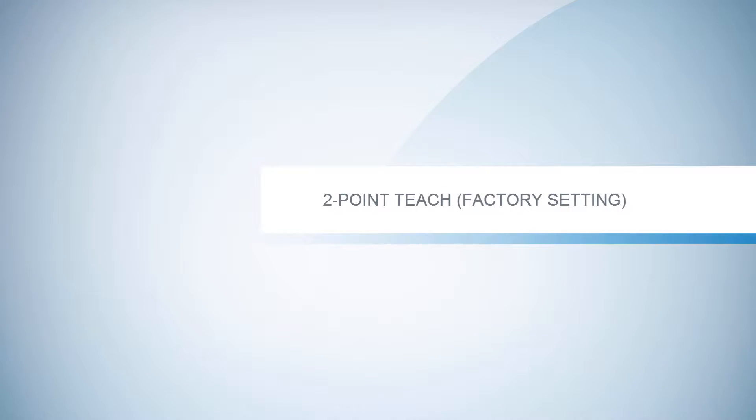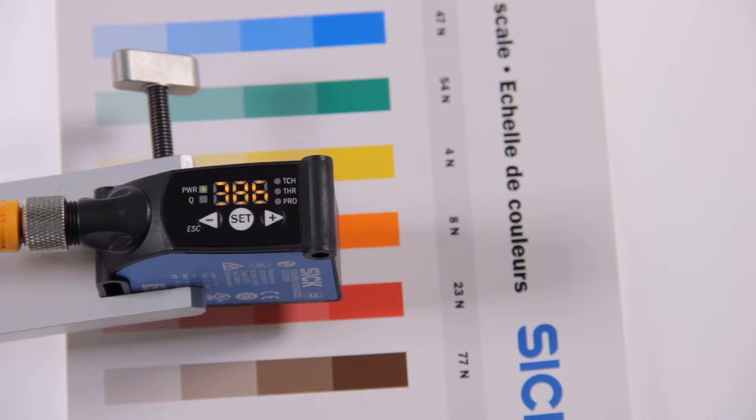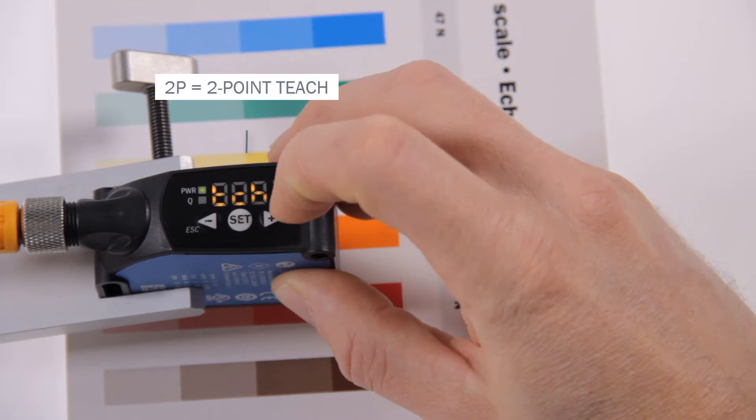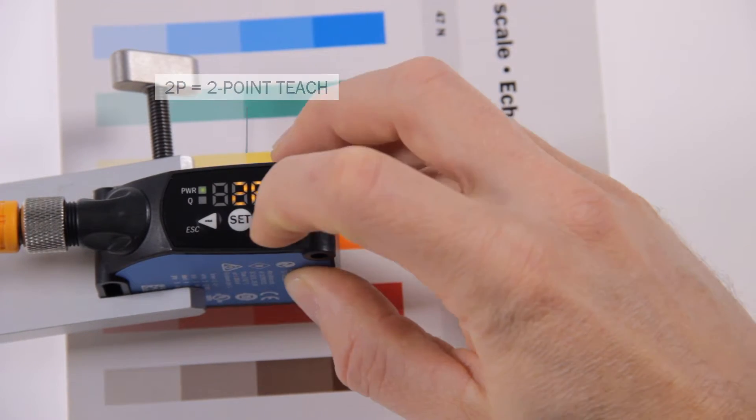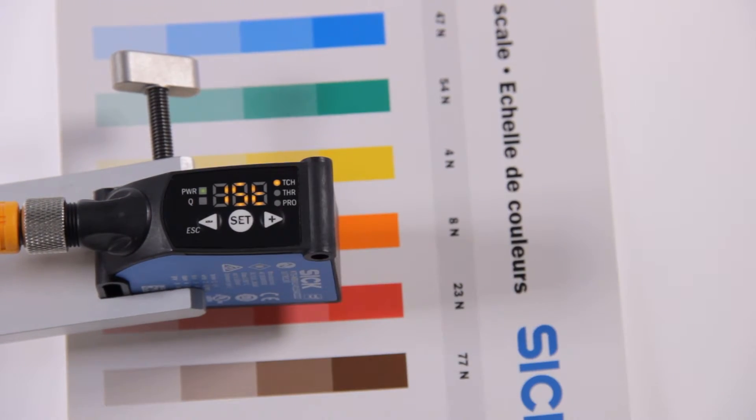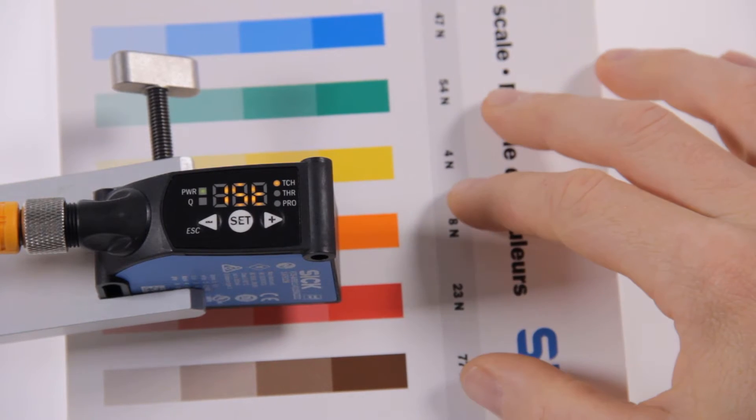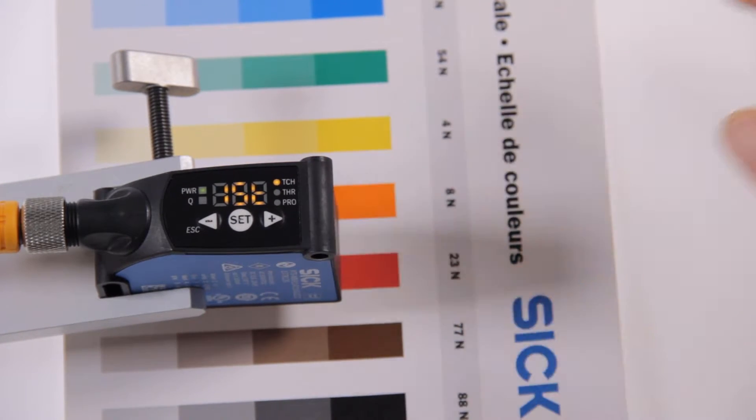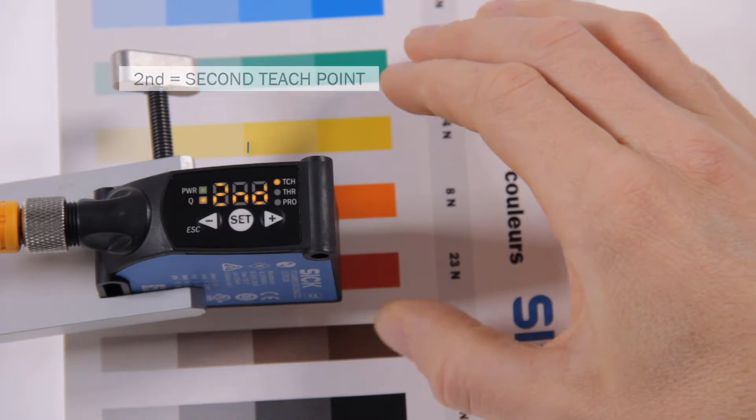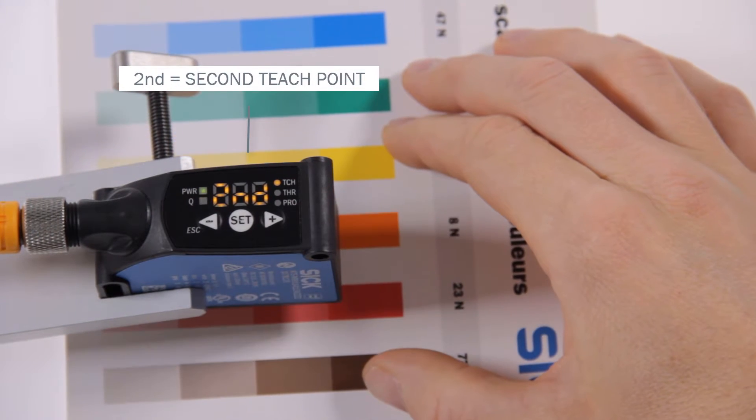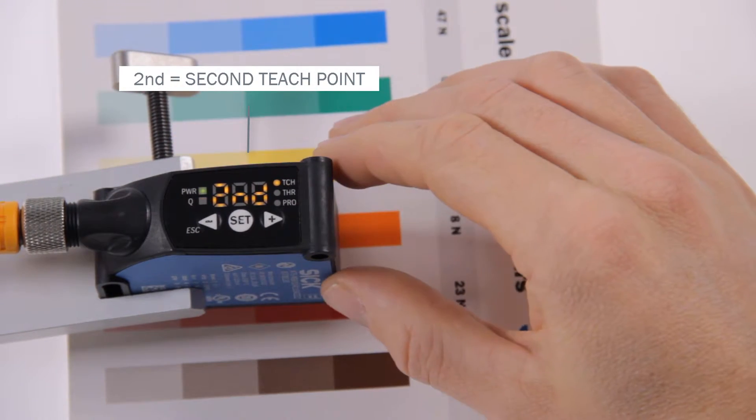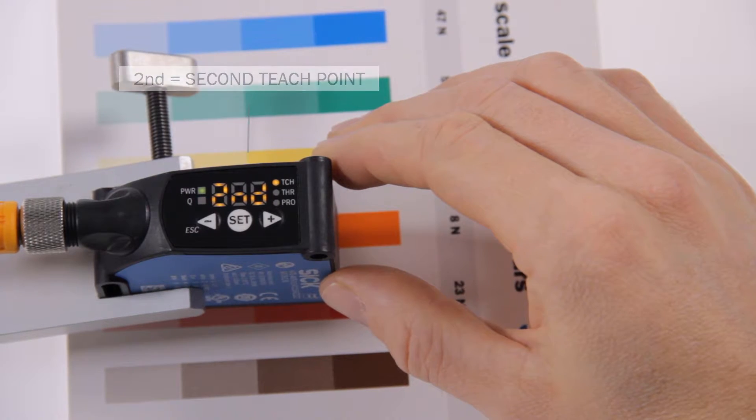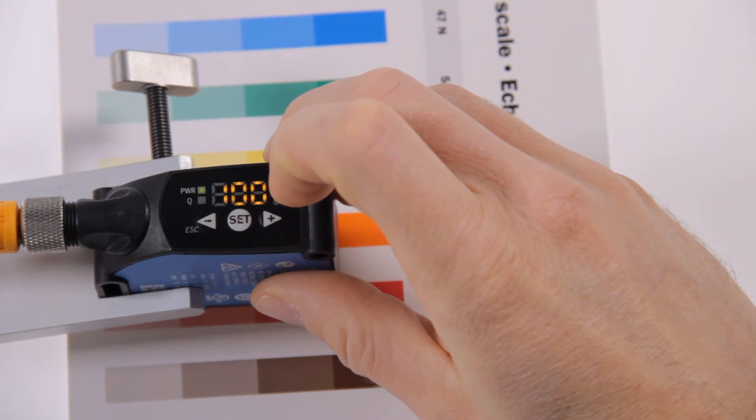2-point-teach factory setting. Select the teach-in menu 2P for the 2-point-teach-in method and confirm with SET. The display shows first, requesting the first print mark. Place the print mark under the light spot and press SET. Now second is displayed, indicating that the second teach-point is required. Now move the background under the light spot and press SET again.